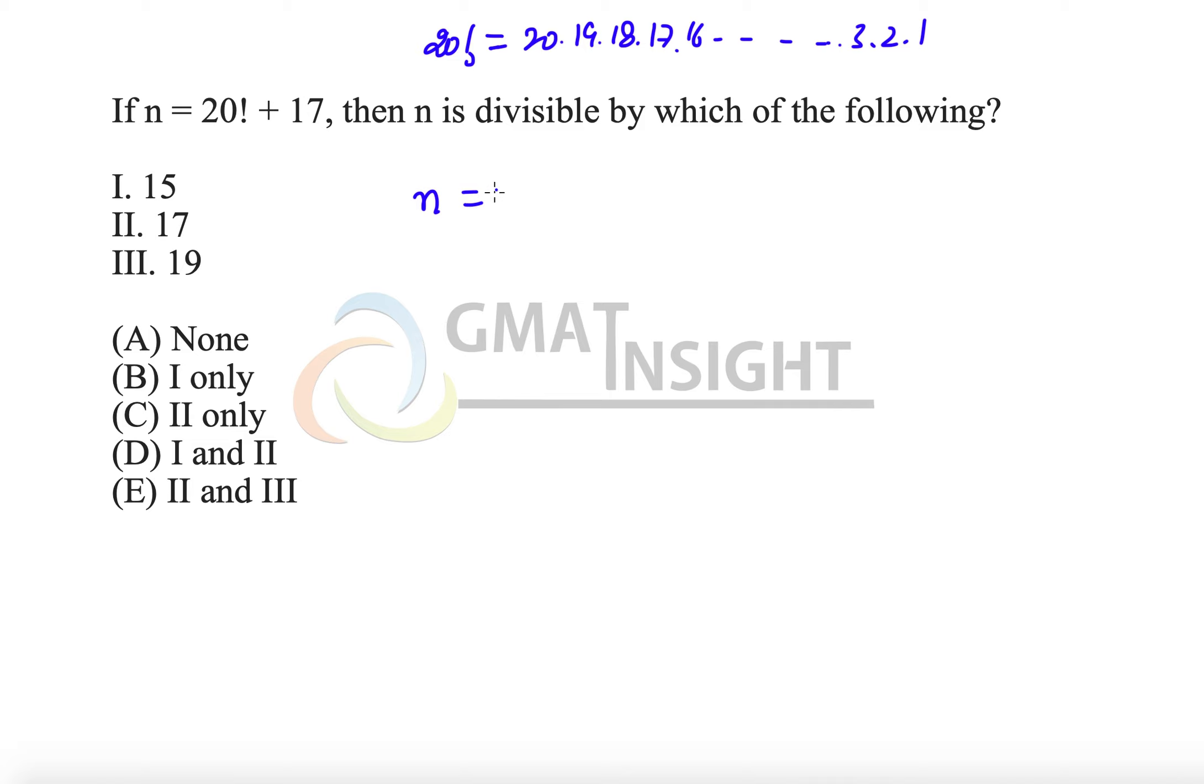So n, which is 20 factorial plus 17, is definitely a multiple of 17 because if we take 17 common, in the bracket I'm left with 20 into 19 into 18 into 16 and so on. 17 can be taken common plus 1. That's how n can be written.